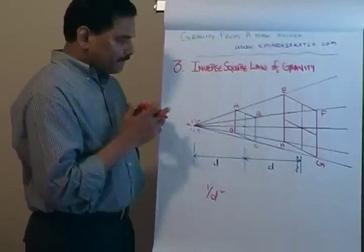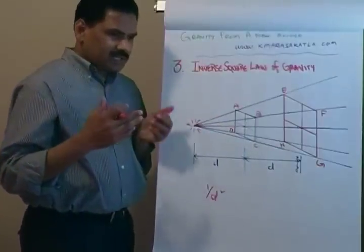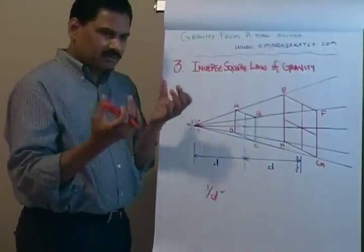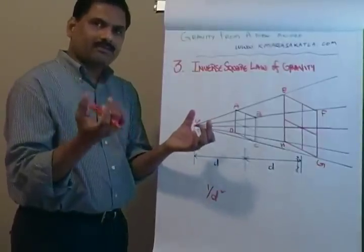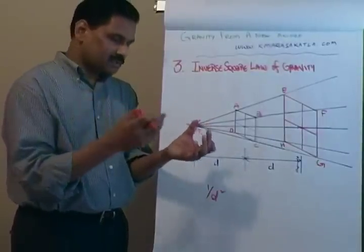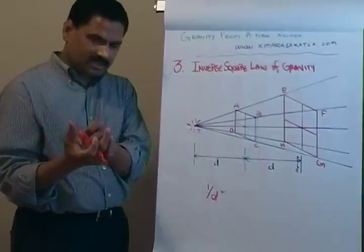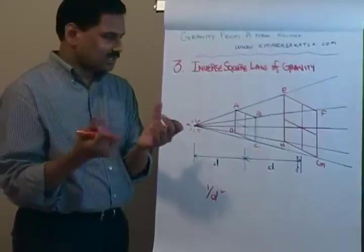And then, gravity is a mutual interaction. When you put two objects here, if one object exerts gravity on this one, this object also exerts gravity on this object. So it's totally a mutual interaction.